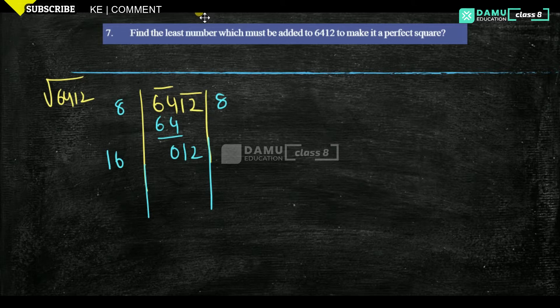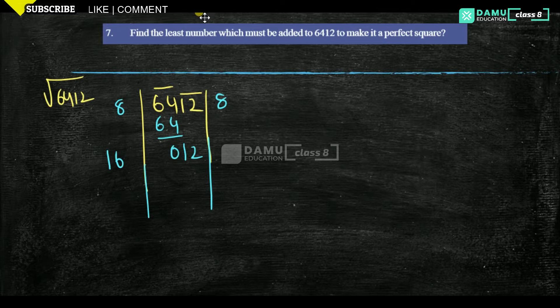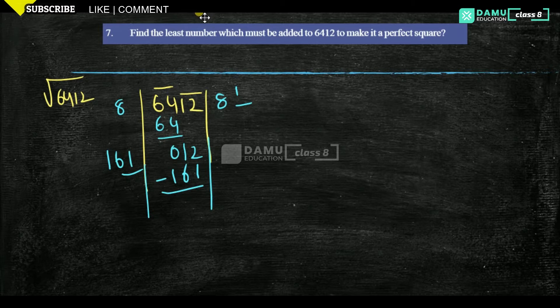So we are getting 12, and the next step brings 161. We have to bring down 12, so 161 into 161 gives us 12 minus 161, which equals minus 149. That remainder is minus 149.